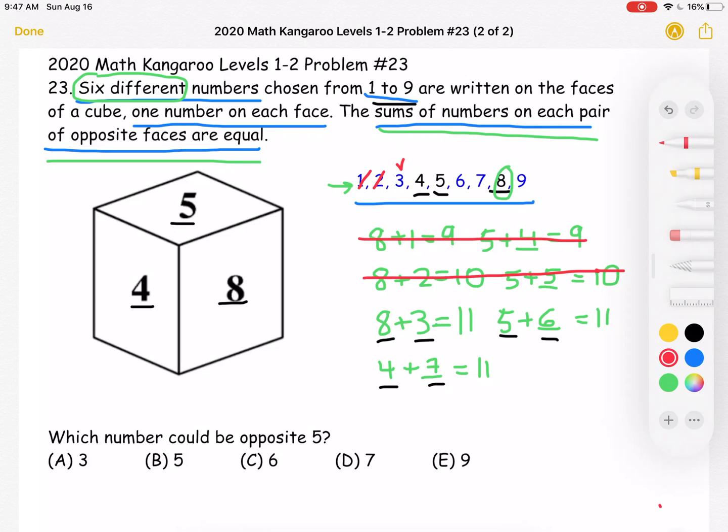And we're looking for the number that's opposite the 5. So we already know that the number opposite the 5 must be 6 so that we can get our sum of 11. And this is answer choice C. Thank you so much for watching and please subscribe if you would like to see more videos.